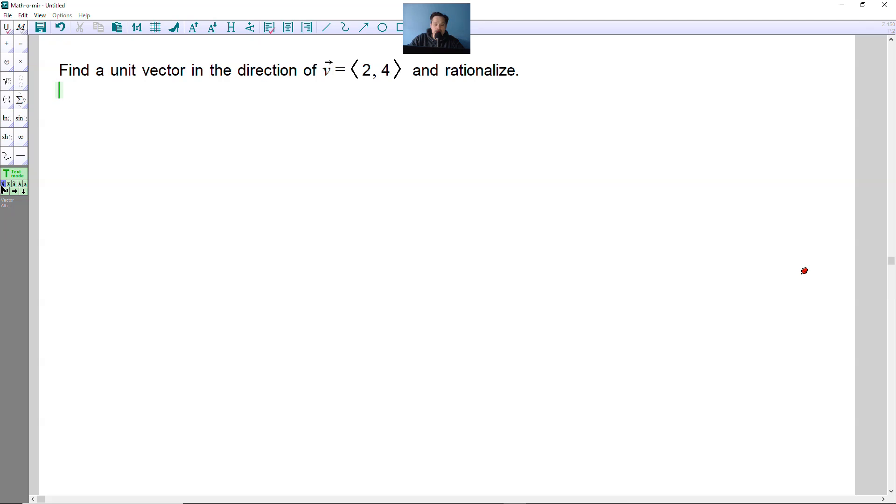Let's take a look at this one. I'm finding a unit vector in the direction of the vector 2, 4, and then we will rationalize the result.